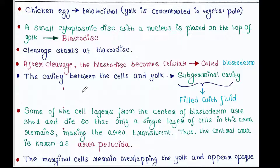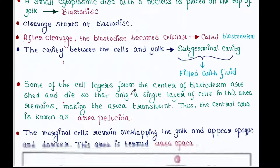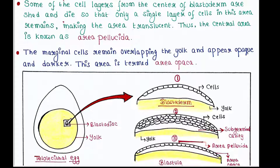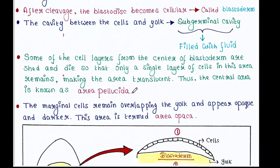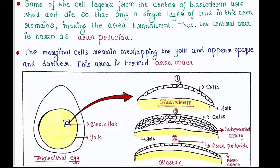A small cytoplasmic disc with a nucleus is placed on top of the yolk. This is called the blastodisc, and cleavage starts at the blastodisc. After cleavage, the blastodisc becomes cellular and is called the blastoderm. You can zoom in and see the cleavage occurring at the blastodisc, where a number of cells are produced. At this stage we call this embryo the blastoderm.